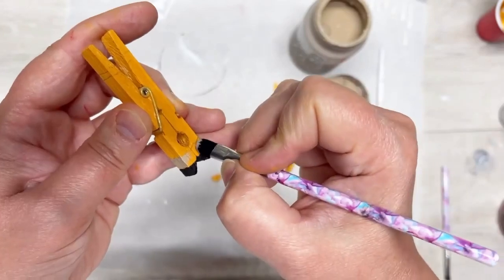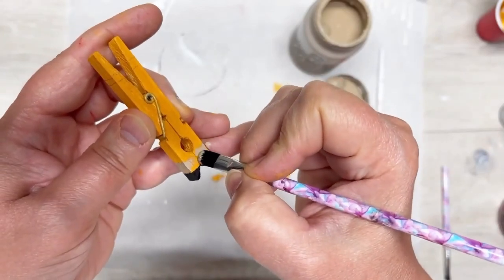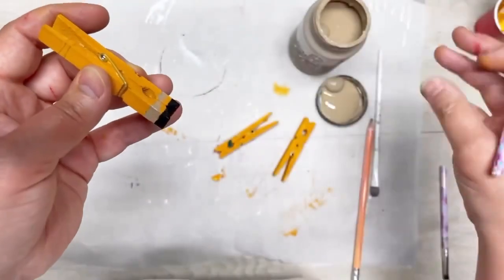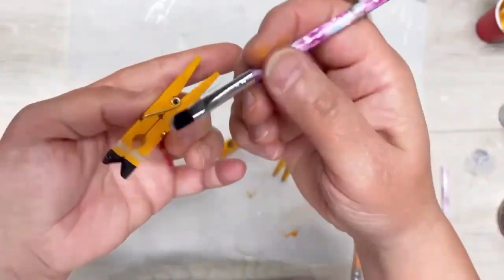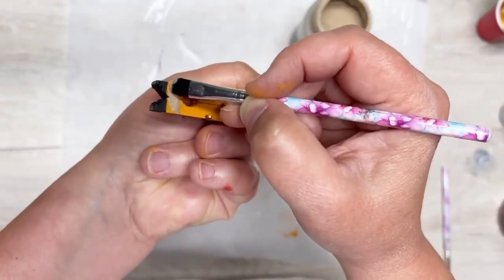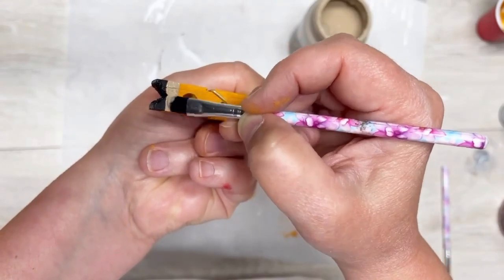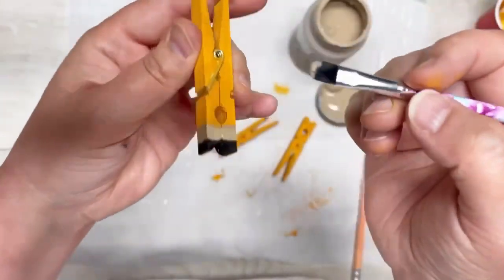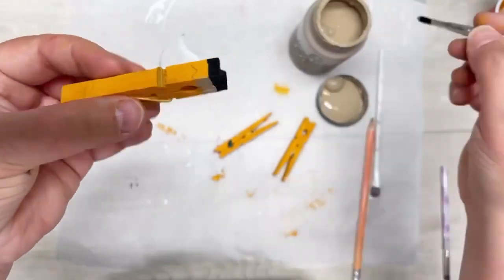You could do a straight line - that would work too, it looks just as cute. But again, if I can make things more difficult for myself, I apparently will look for any opportunity to do that. This is chalk paint and I just went around and continued the pattern.